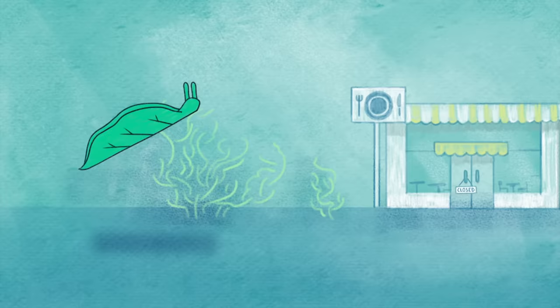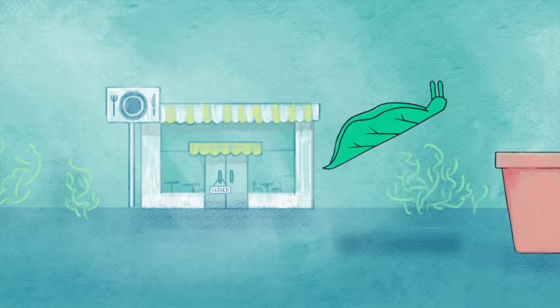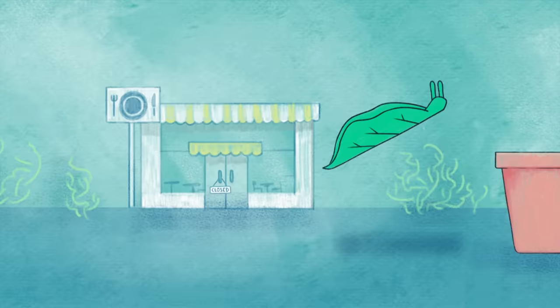This slug-slash-plant is just one of millions of species that uses crafty evolutionary adaptations to survive. Take the orchid. Just a pretty flowering plant, right? Wrong. Find out about their sneaky tactics of deception with this video.